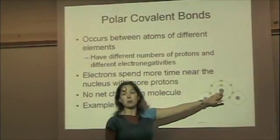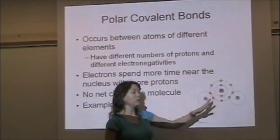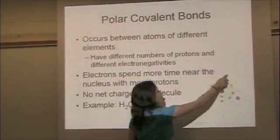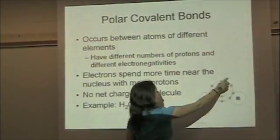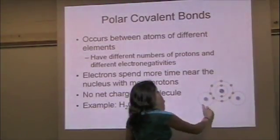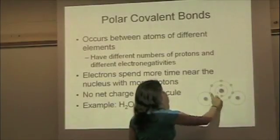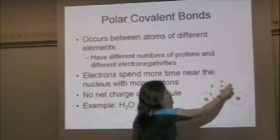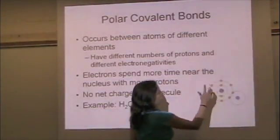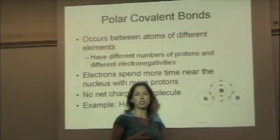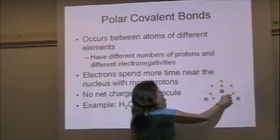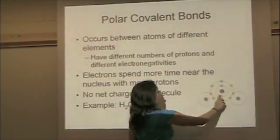Oxygen has eight protons. That's a lot more positives. So the electrons spend a lot of time rotating around the oxygen atom. Every once in a while they go down to the hydrogen, but then they come up and spend more time around the oxygen nucleus because it has so much positive charge in there.